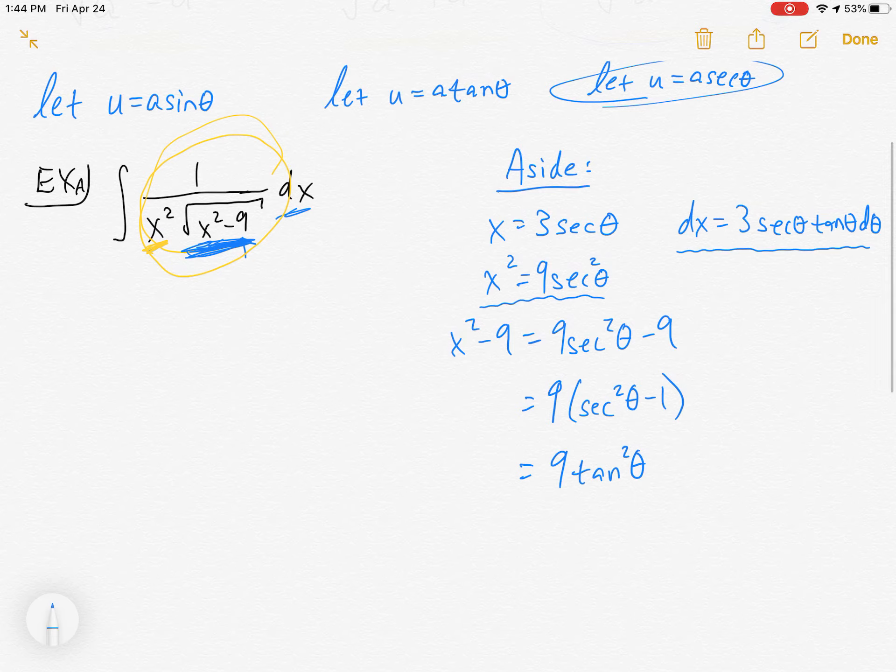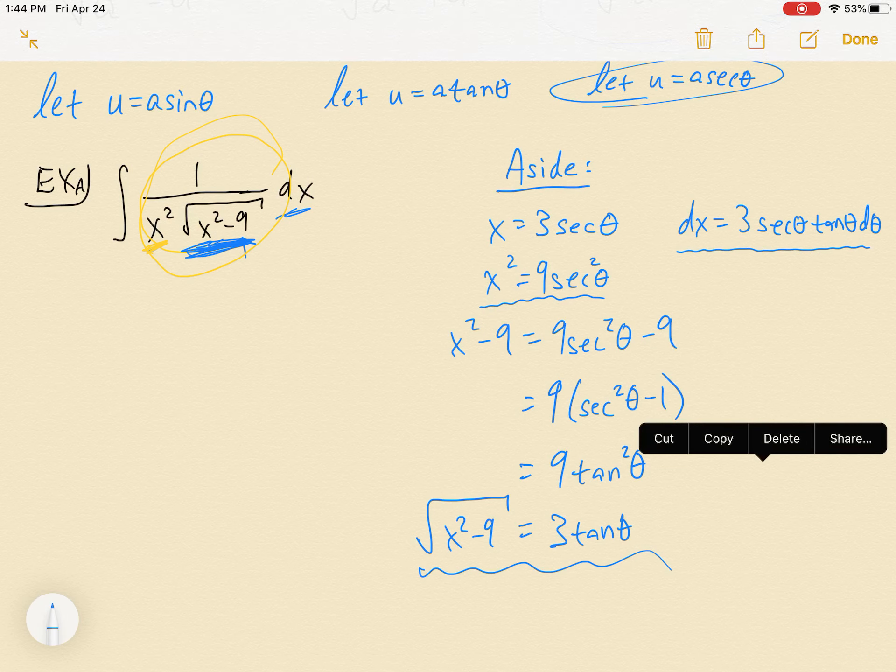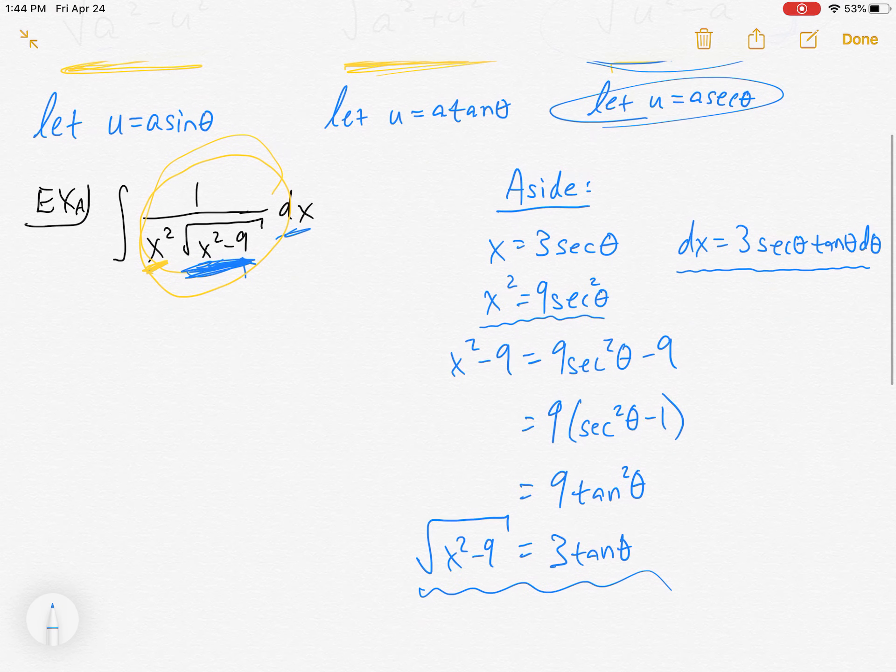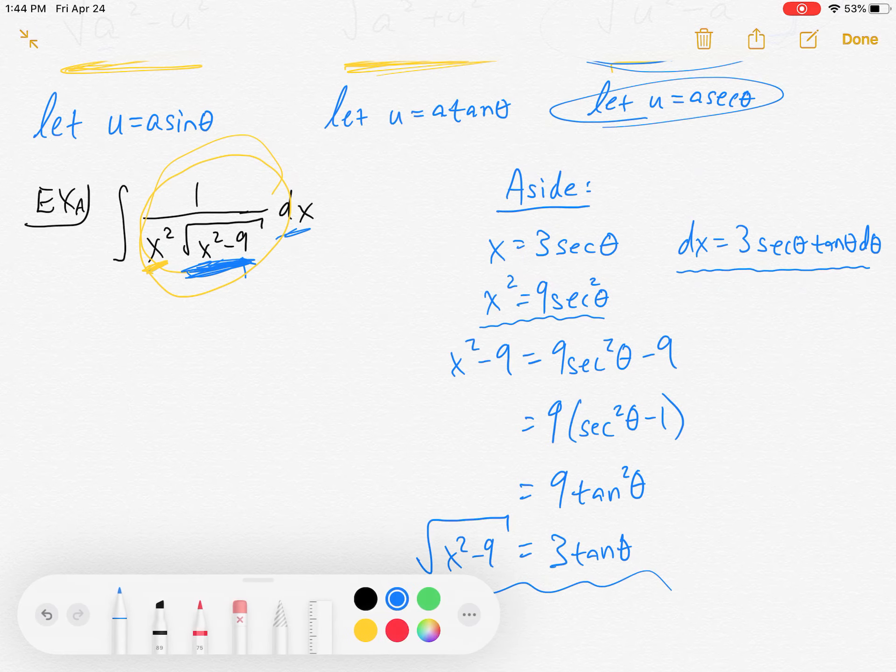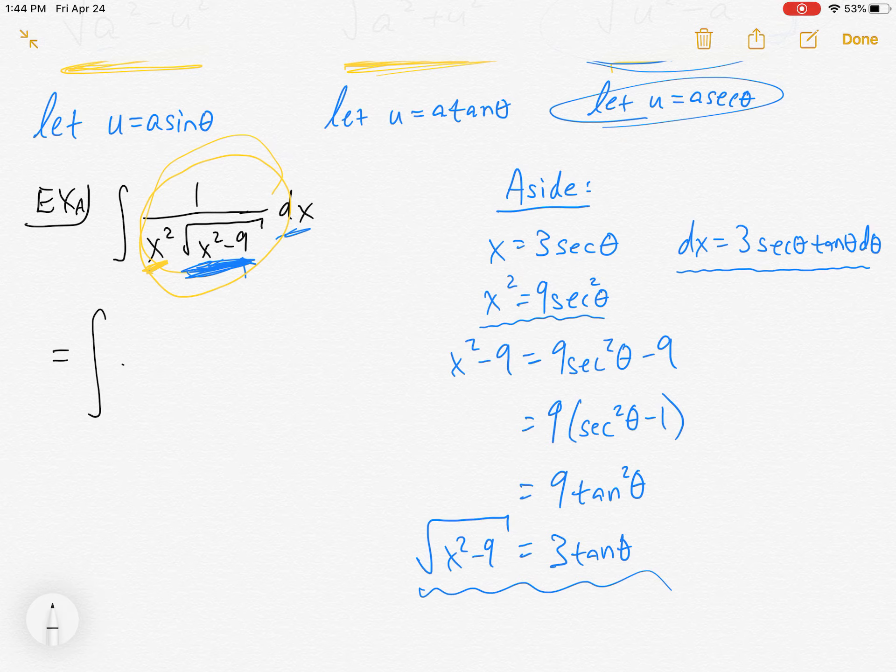If I subtract 9 from both sides I get that. Then this will always happen every time. When you get here, before you do the square root, factor the 9 out. It will always be a common term, and then that will always be a Pythagorean identity. Look, there it is right there. So what is it? Secant squared minus 1 is tangent squared. So this is equal to 9 tangent squared theta. When you square root that, you get 3 tangent theta. This will always happen.